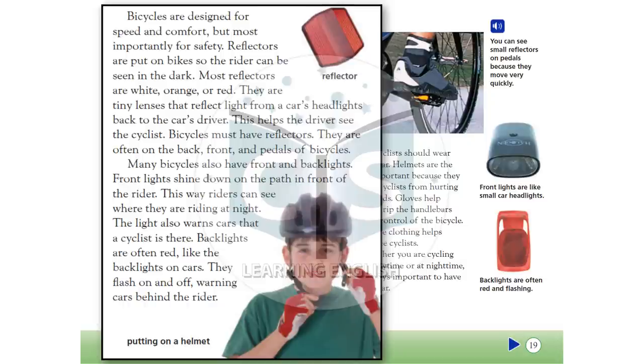Many bicycles also have front and back lights. Front lights shine down on the path in front of the rider. This way riders can see where they're riding at night. The light also warns cars that a cyclist is there. Back lights are often red, like the back lights on cars. They flash on and off, warning cars behind the rider.